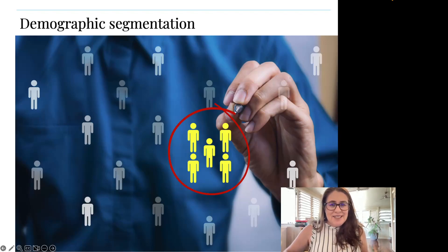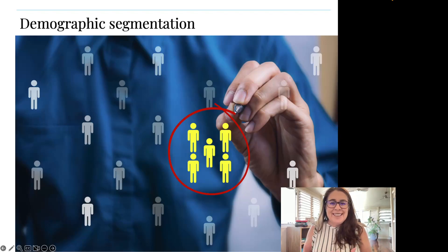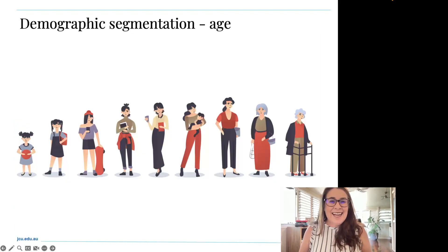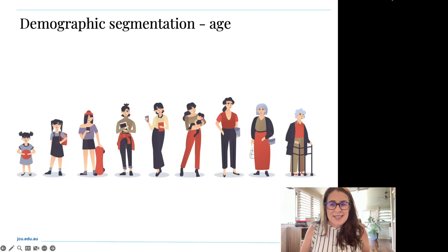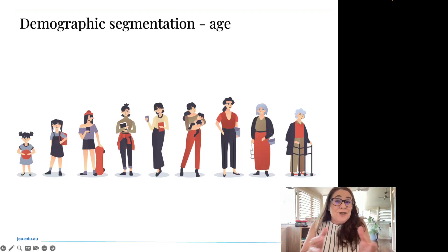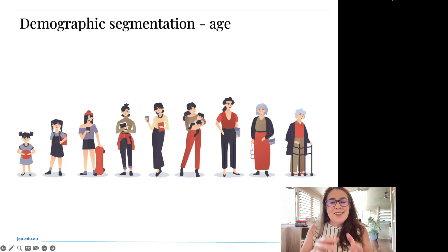First, let's look at demographic segmentation. Marketers use demographic characteristics because they're often closely linked to consumer needs and purchasing behavior, and they can be readily measured. These include things such as age — a really common variable used for segmentation purposes. As we know from personal experience, our needs and wants have changed significantly from being an infant to whatever stage of life we're in now, and those needs and wants will continue to change through the different seasons of life.